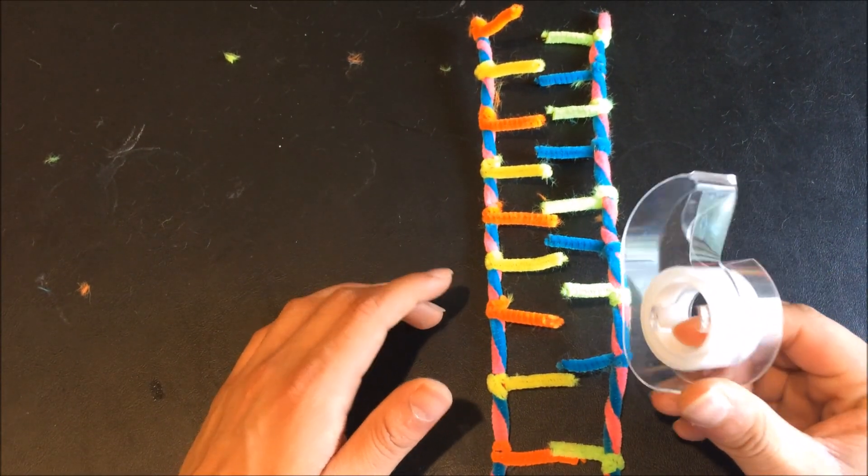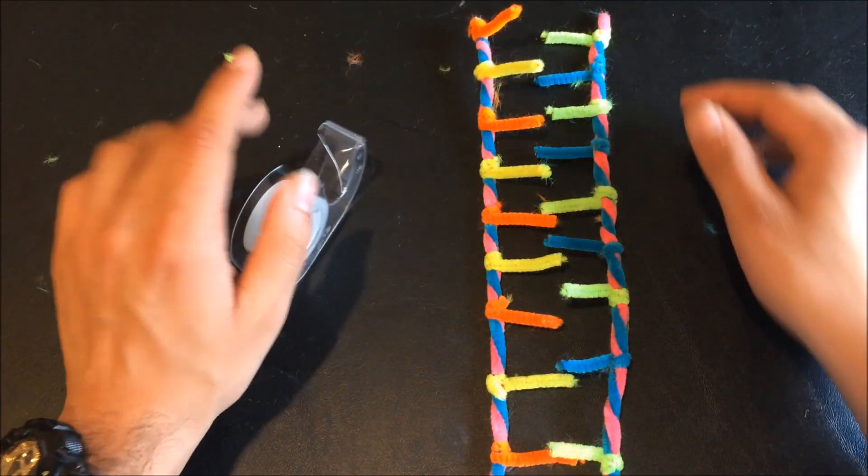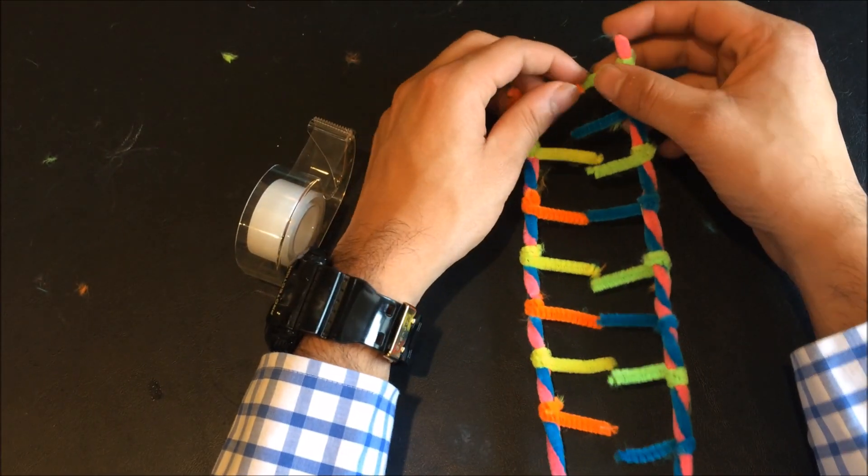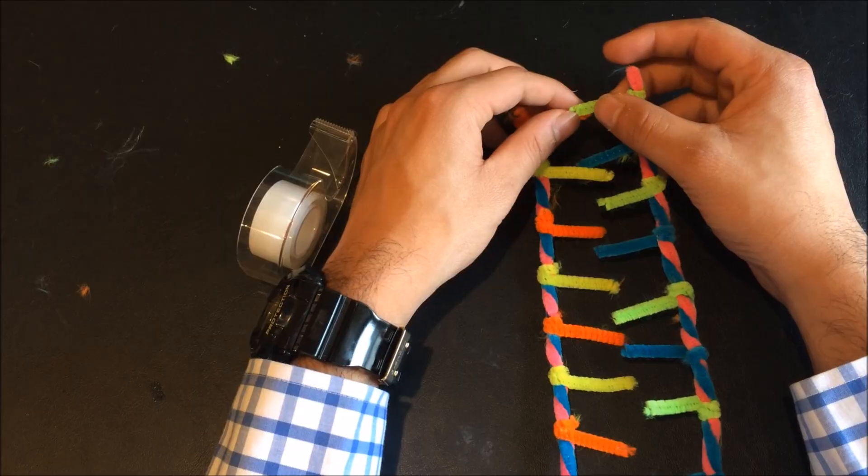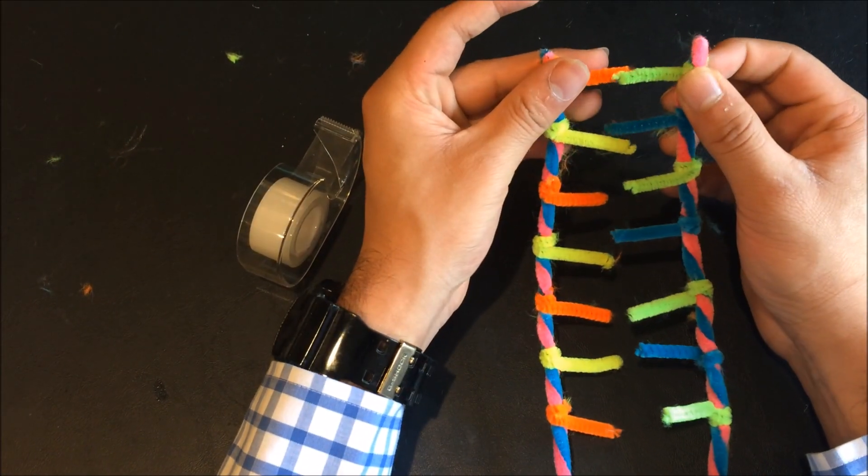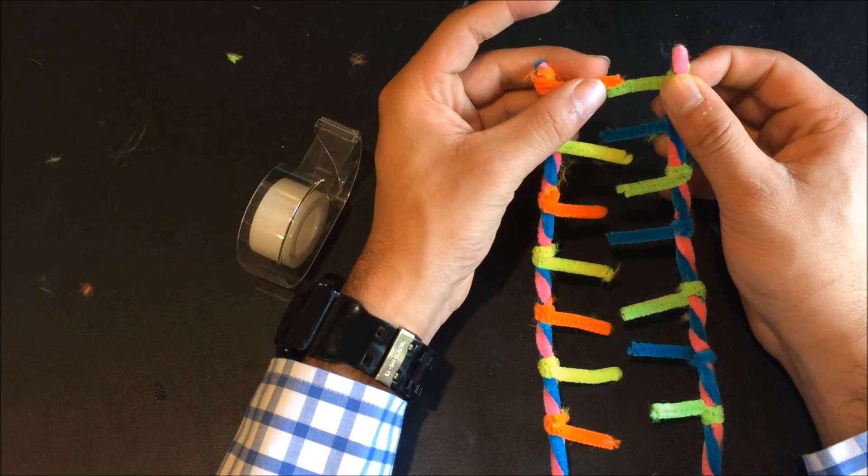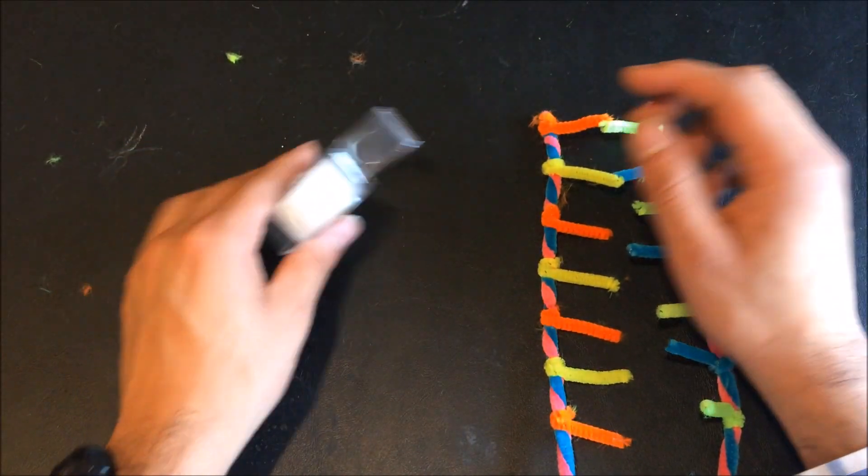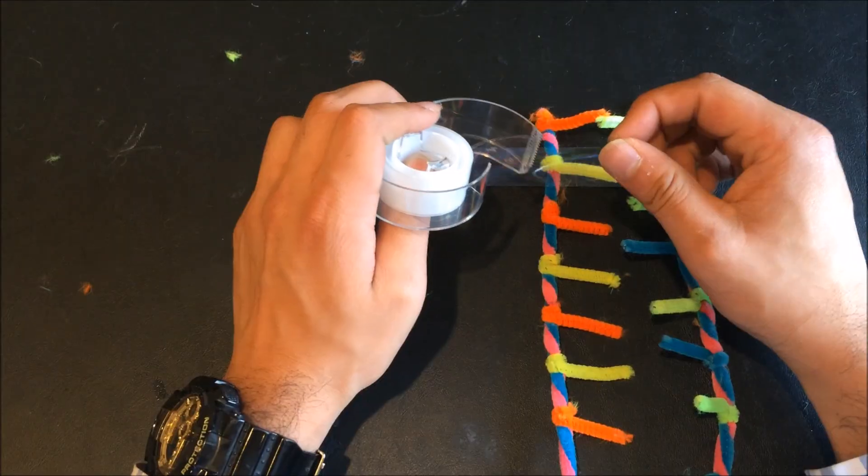So now, you'll actually be using the tape. What you want to do is take your very first pair and you want to attach them like a ladder. So just have this overlap right here. And once you have an overlap, take a good amount of tape and just tape it together.